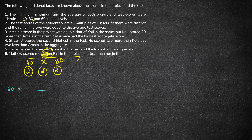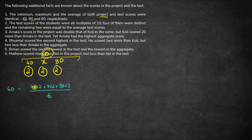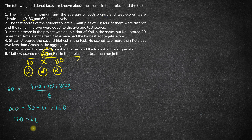Two students get 40 marks each, two get 80 marks each, and two get x marks each. So total marks = 40×2 + x×2 + 80×2, divided by 6 gives the average of 60. So 6×60 = 360 = 80 + 2x + 160; thus 360 − 240 = 120 = 2x, so x = 60. This means the third group's score is 60. In project, the marks are 40, 60 and 80 — one team gets 40, one gets 60, and one gets 80.